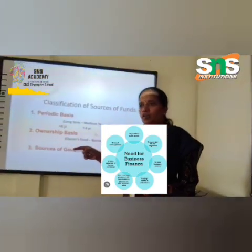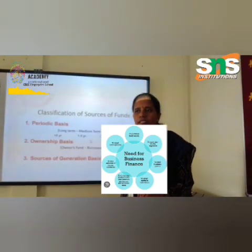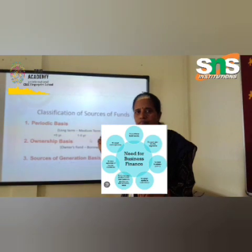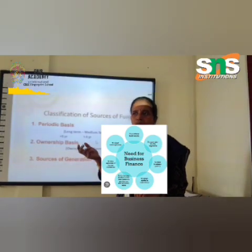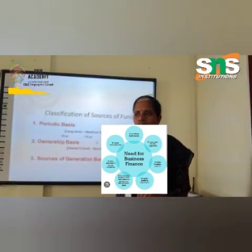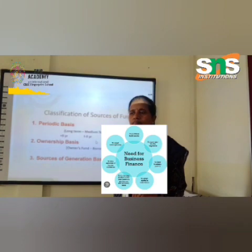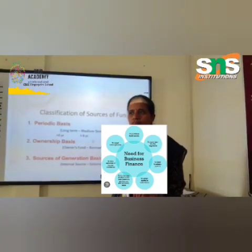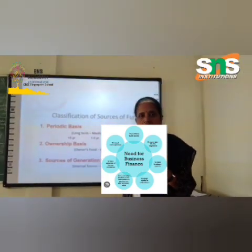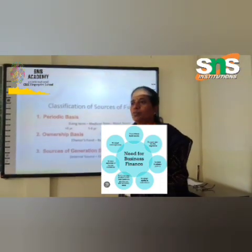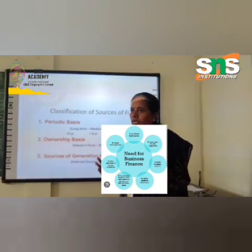On a periodic basis, there are three types: long term, medium term, and short term. Long-term sources fulfill the financial requirements of an enterprise for a period exceeding five years, which includes sources such as shares, debentures, long-term borrowings, and loans from financial institutions — like bank loans and debentures. These kinds of funds are helpful for long-term fixed capital requirements.